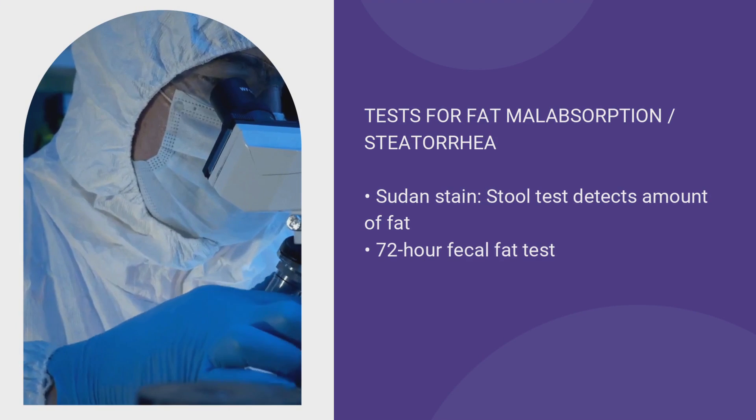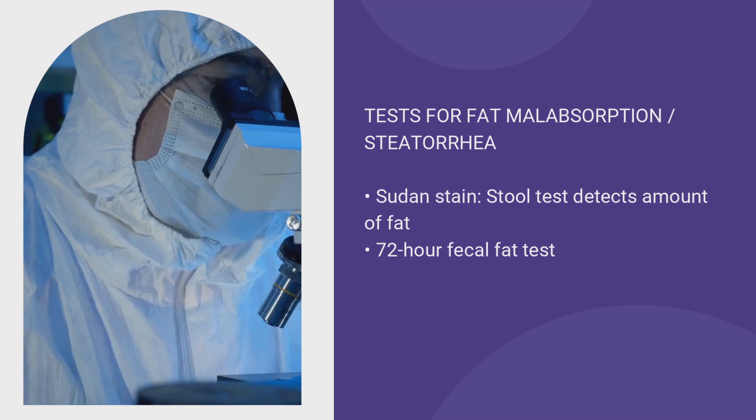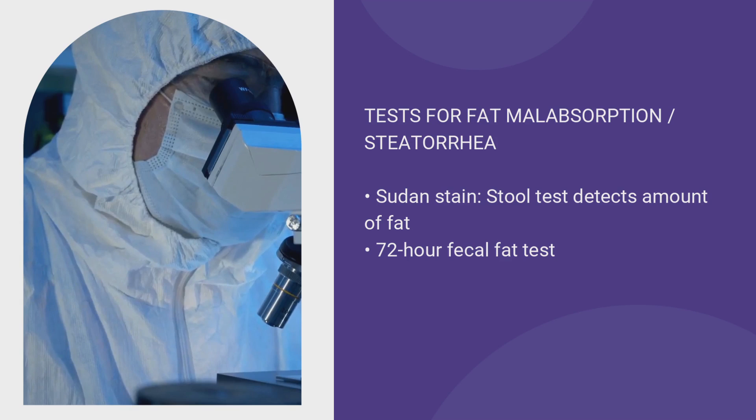There are a couple of other tests sometimes used to look for steatorrhea. A Sudan stain is a stain of your stool for fat globules. Then there's the dreaded 72-hour fecal fat test — you collect your stools for 72 hours and they analyze the amount of fat. During that time you must ingest a high-fat diet, essentially a stress test to see if your bowel can absorb fat.